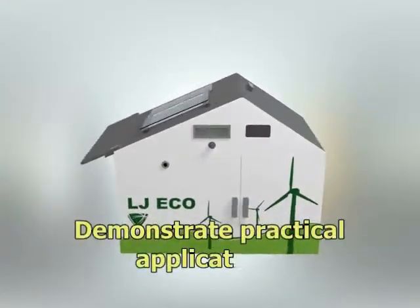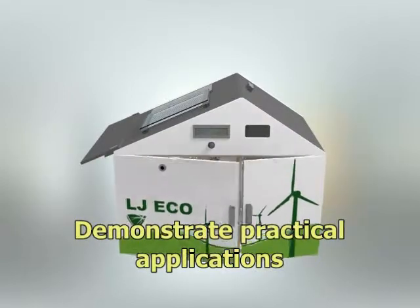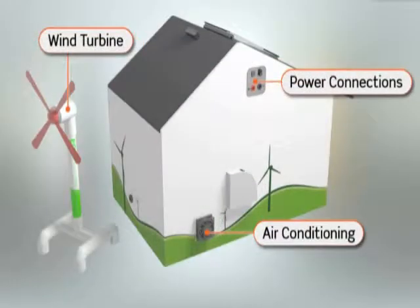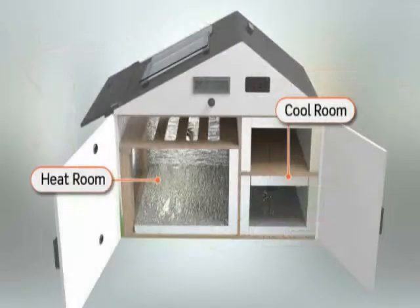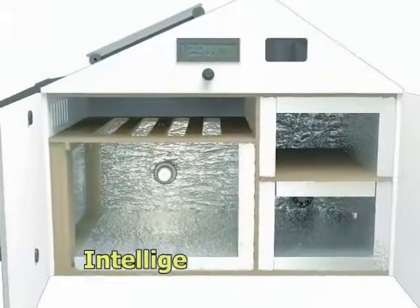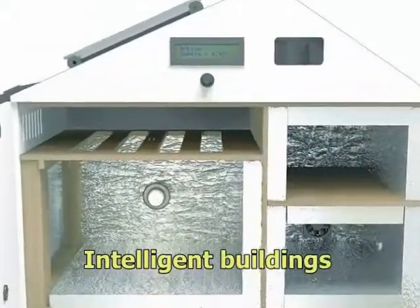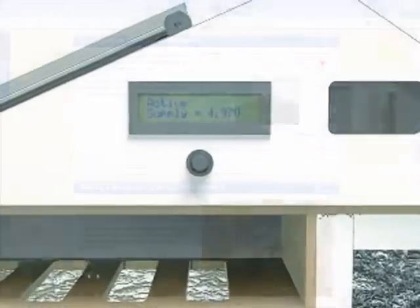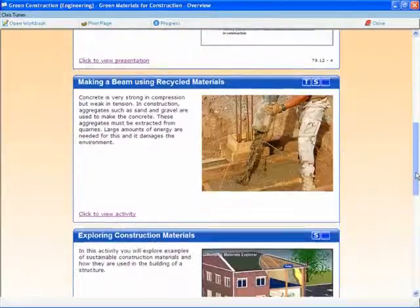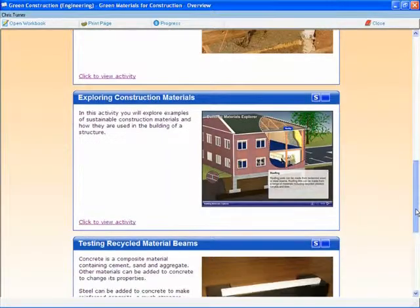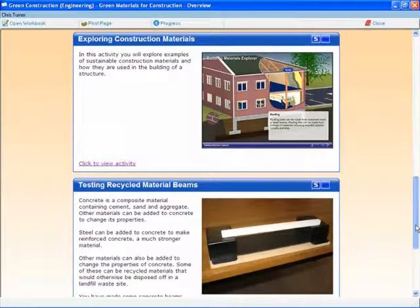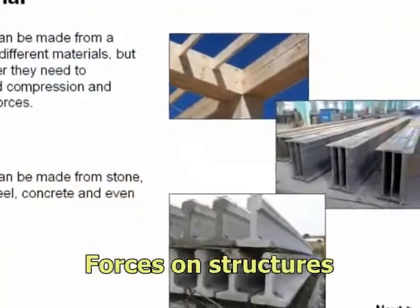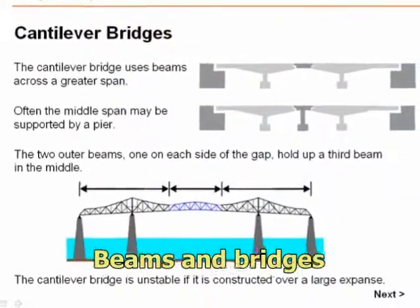The model building has been specifically designed to allow the teacher to demonstrate the practical applications of a number of micro scale power generation and heating systems. The eco building is intelligent and has its own electronic control and monitoring systems. The module also covers green construction materials, forces on structures, and beam and bridge designs.